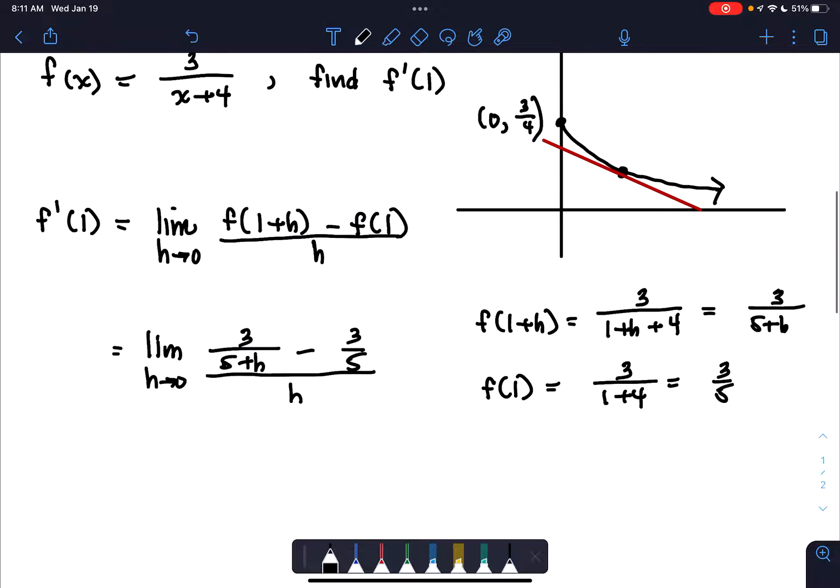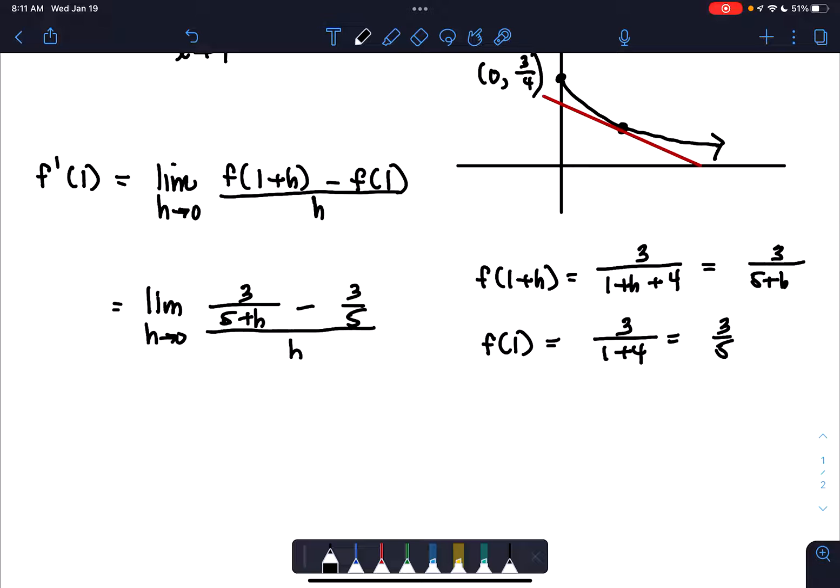So remember, at this point, the key is to simplify. When we do substitute 0 for h, we get 0 over 0, which means, yes, we should try to manipulate the expression and try to cancel something out.